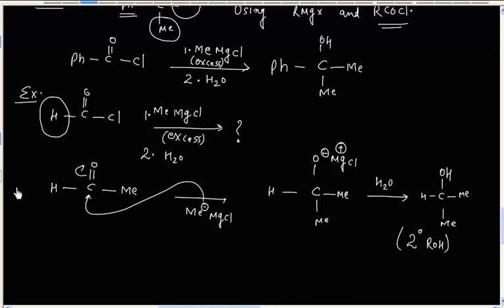In this lecture, we discussed reactions of Grignard reagent with acid chloride or acid halide. The important point is that acid halide has a leaving group, so we will have substitution, not an addition reaction. The final product is a ketone. This ketone can be further attacked by excess Grignard reagent to give the final product as a tertiary alcohol.